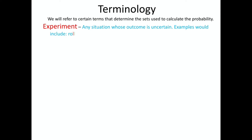Let us have a look at some terms used in probability. The first term is experiment: any situation whose outcome is uncertain. Examples include rolling a dice, flipping a coin, picking a card, predicting rain, or predicting disease. In these examples, we are not certain about the exact outcome, so we need to perform an experiment to find out.